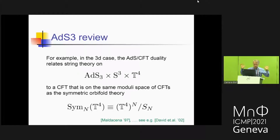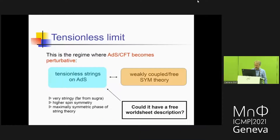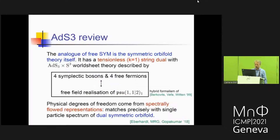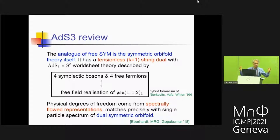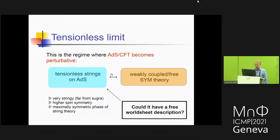The symmetric orbifold point is a specific conformal field theory — a solvable, almost free conformal field theory — but it has exactly marginal operators so you can deform it, making it part of a whole moduli space of conformal field theories. You can ask: what's the analogue of free super-Yang-Mills in this three-dimensional context? The natural idea is that the analogue of free super-Yang-Mills is the symmetric orbifold theory itself, because it consists of 4N free bosons and 4N free fermions modded out by some symmetry, and is certainly exactly solvable.